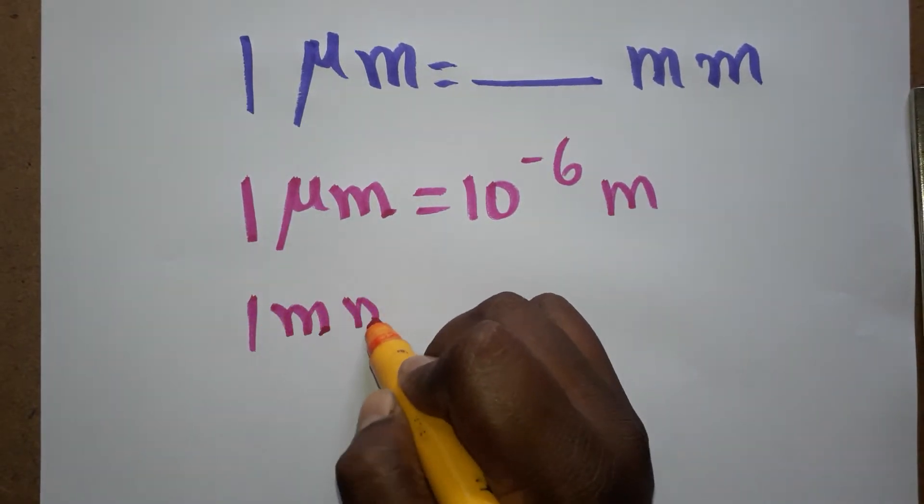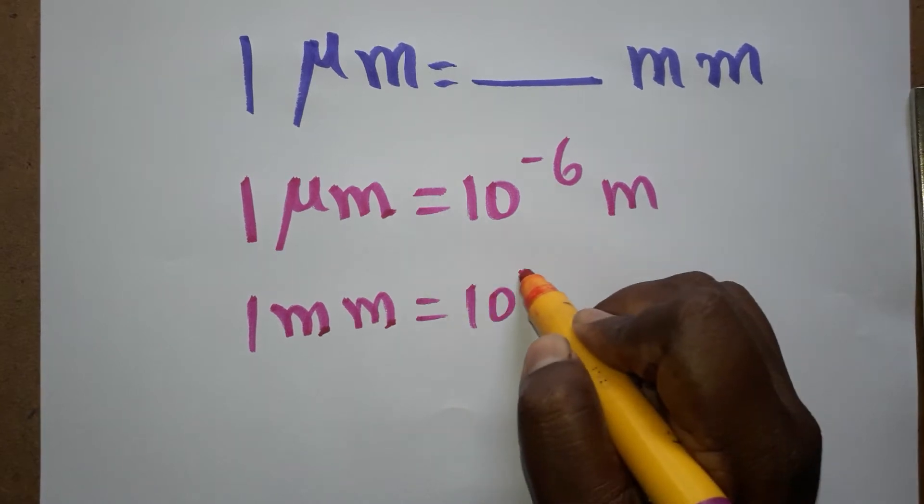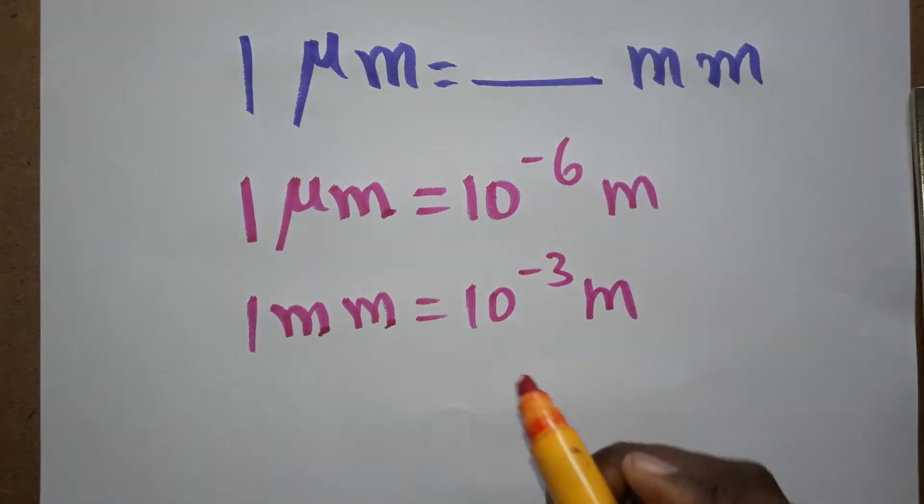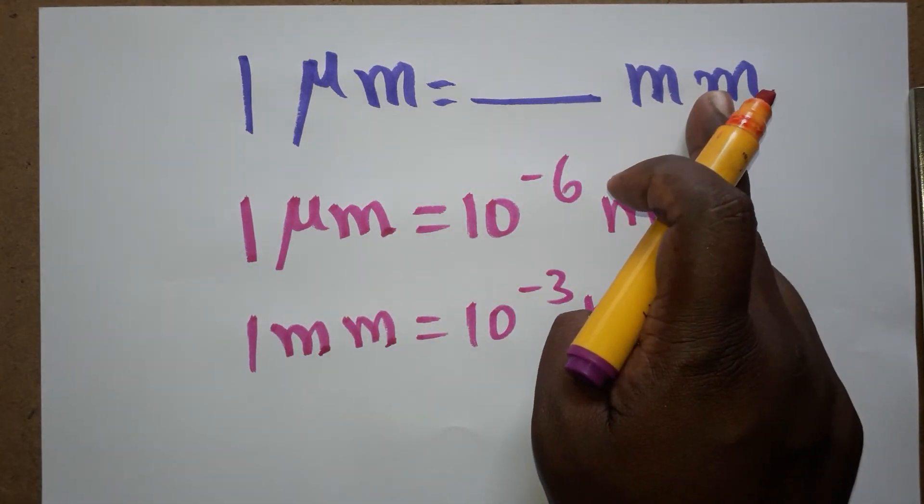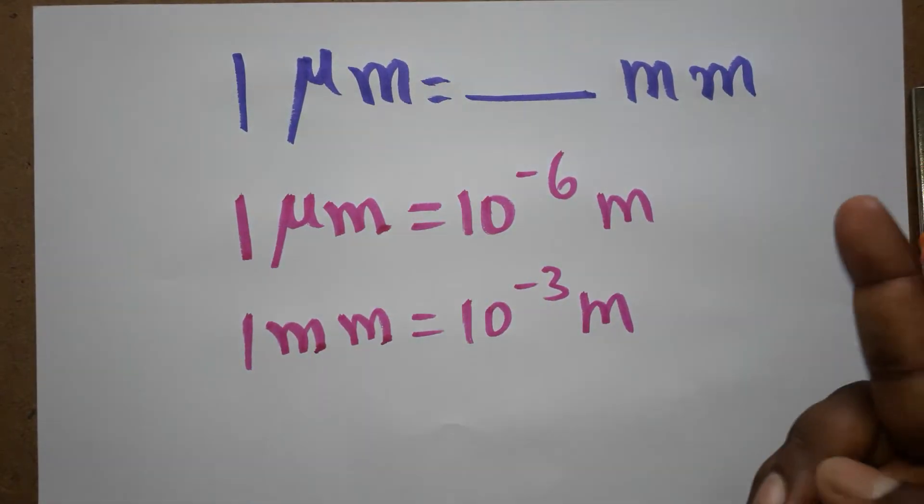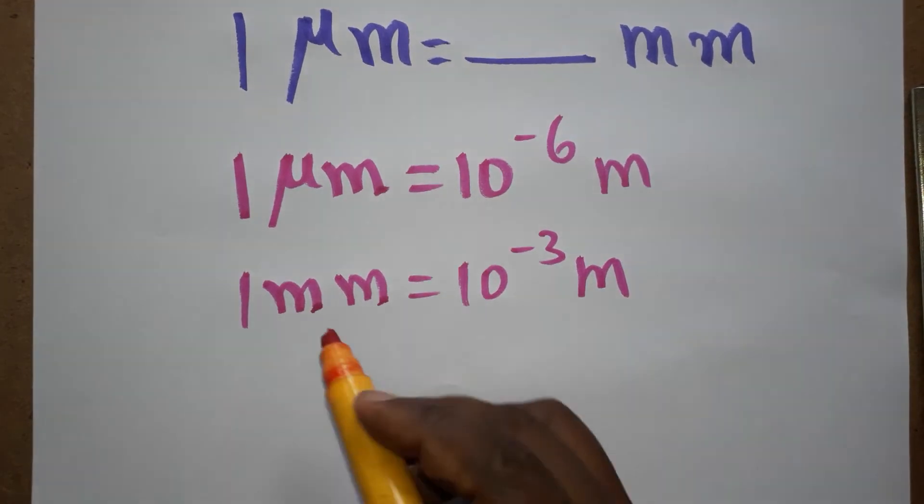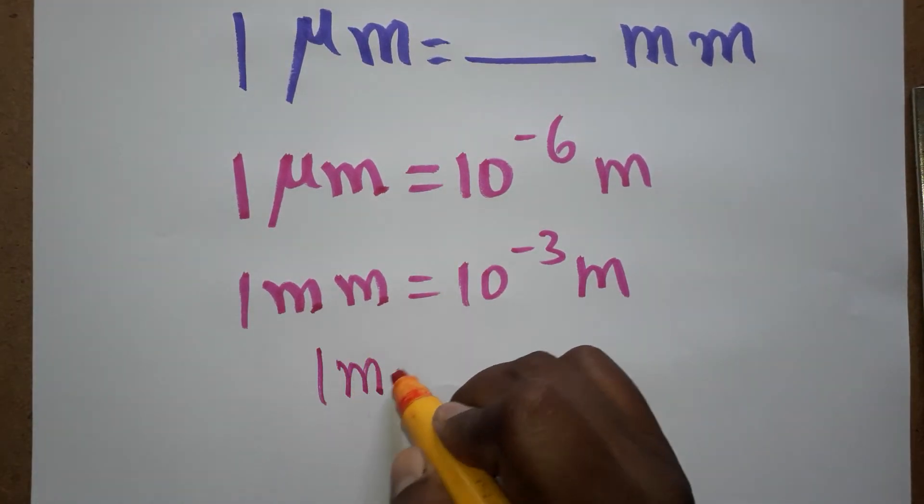1 millimeter equals 10^-3 meter. Now the question is: 1 micrometer equals how many millimeters? We already know that 1 meter equals 1000 millimeters.